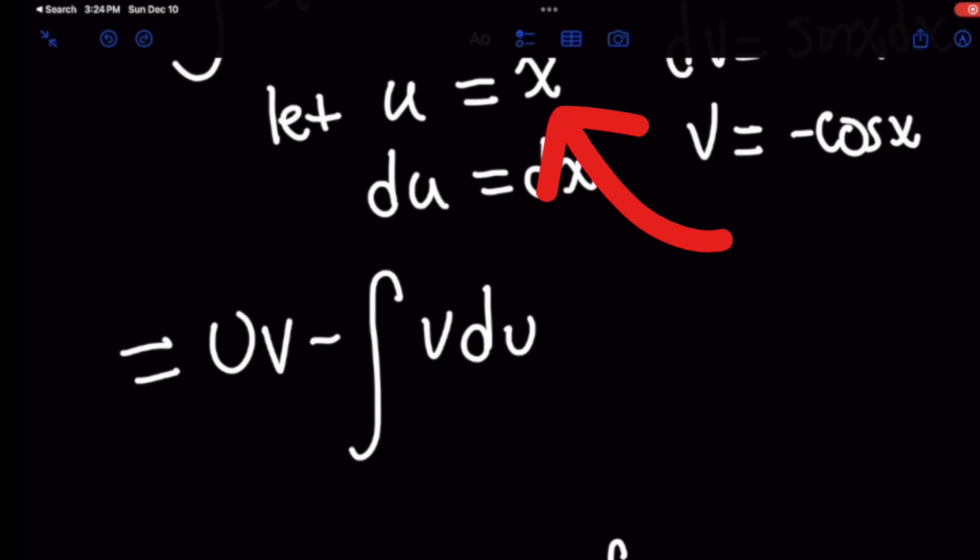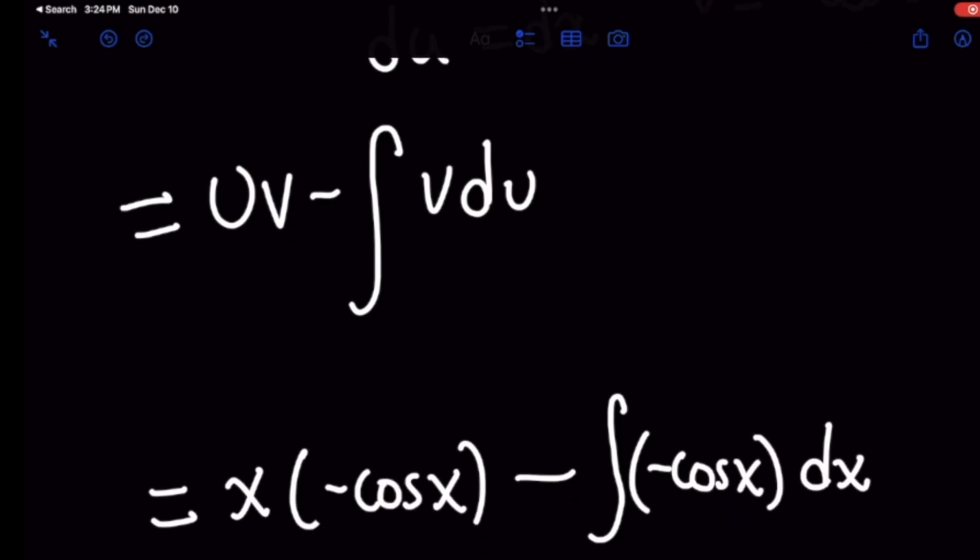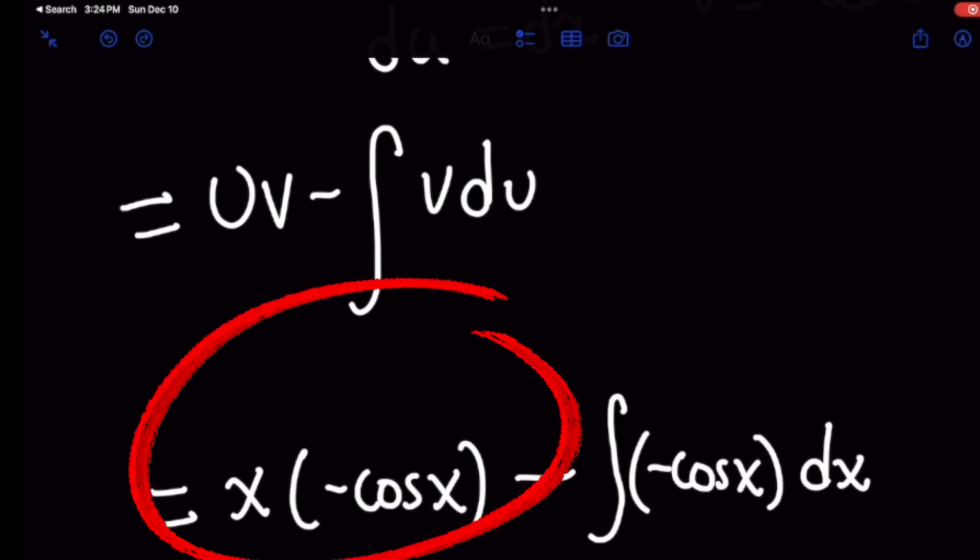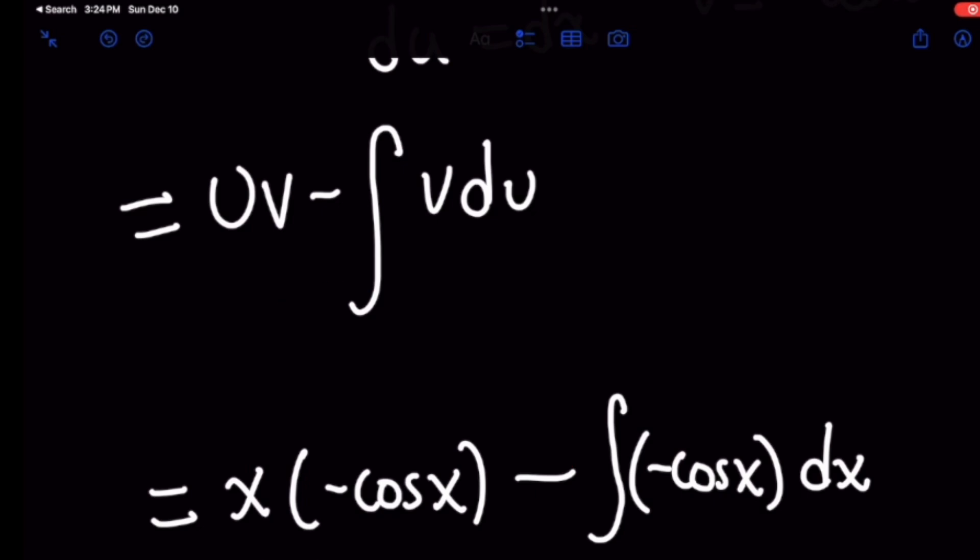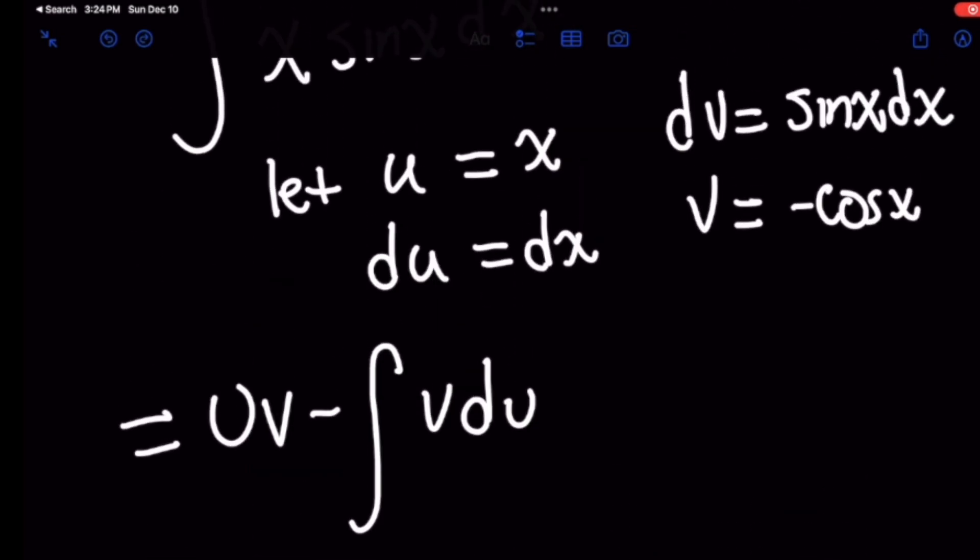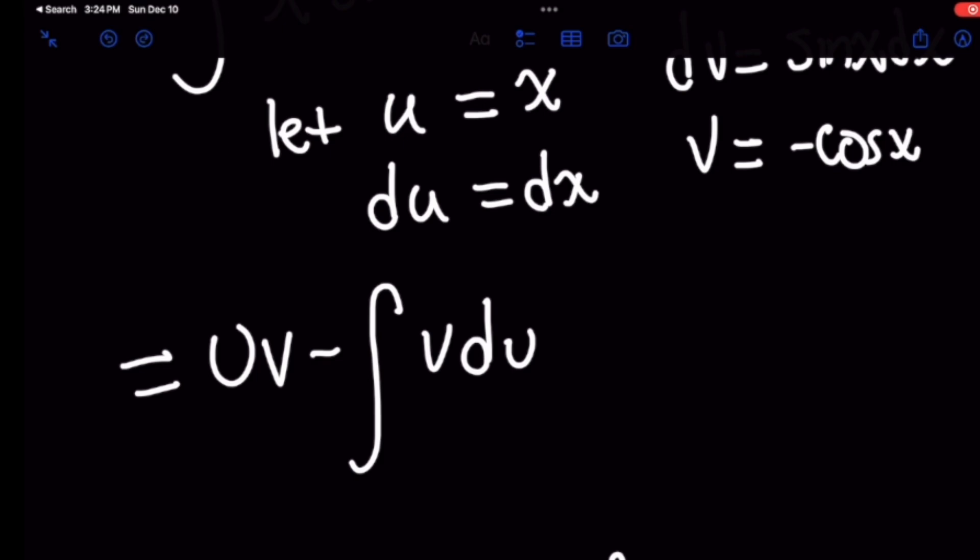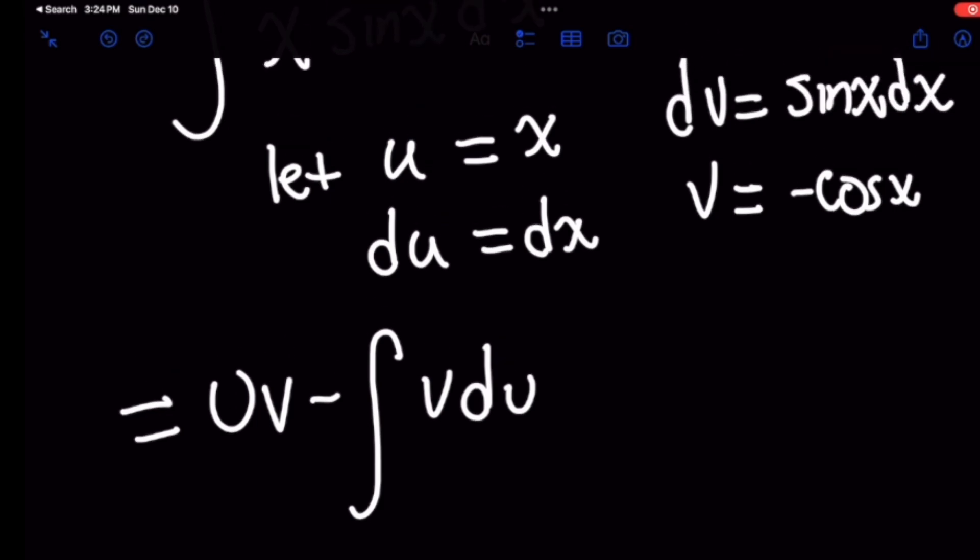So u itself is x, v is negative cosine of x and that gives you this product on the left hand side and then we're going to subtract the integral of in parentheses v which is your negative cosine of x and then your du is simply the differential dx.